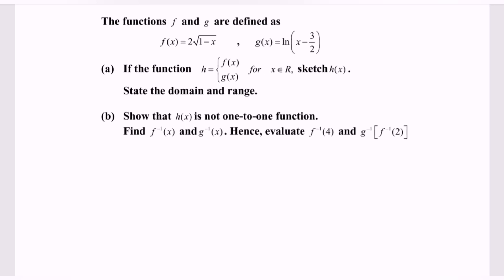Part A: if the function h is the piecewise function for f and g, for x with all real numbers, sketch h(x) and state the domain and range. Part B: show that h(x) is not a one-to-one function. Then find the f inverse and g inverse. Hence, evaluate f inverse for the value 4, and g inverse composed with f inverse for the value 2.